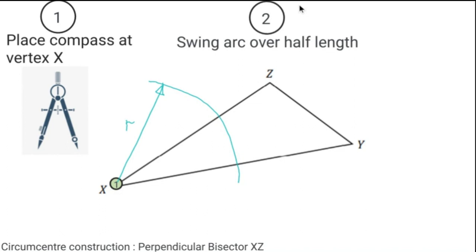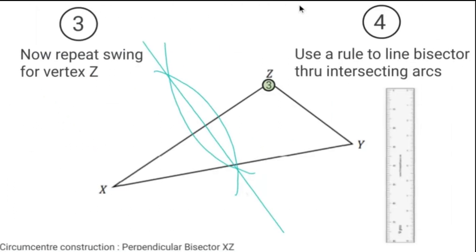This will help put your joint construction lines. Again, repeat for vertex Z. Both arcs then intersect and that line through the two points will be your perpendicular bisector. It bisects the line XZ.